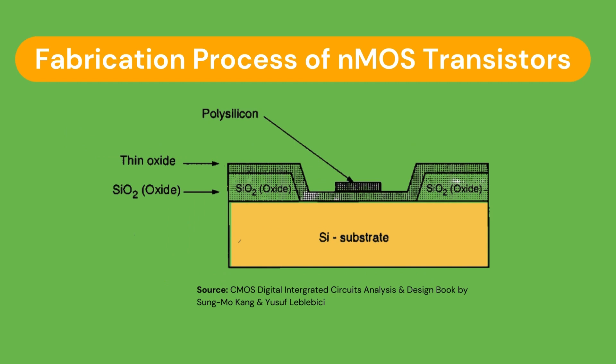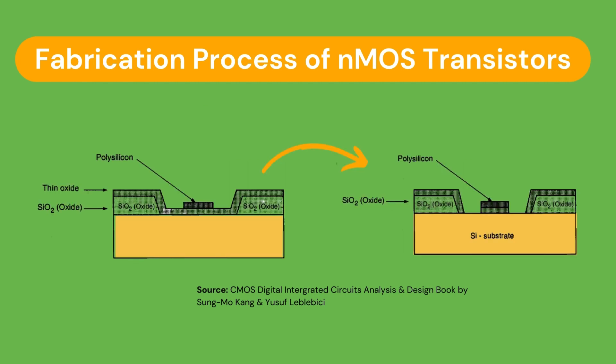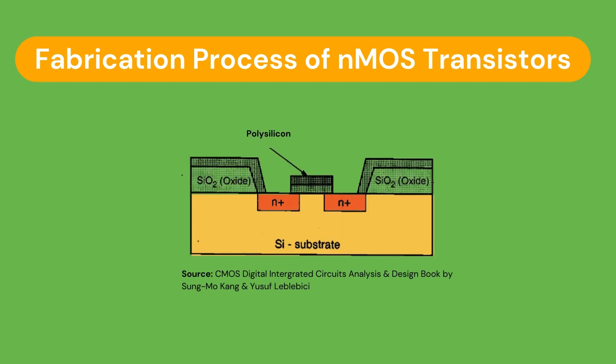After depositing the polysilicon layer, it is patterned and etched to form the interconnects and the MOS transistor gate. The thin gate oxide not covered by the polysilicon is also etched away, which exposes the bare silicon surface on which the source and drain junctions are to be formed. The entire silicon surface is then doped with a high concentration of impurities, either through diffusion or ion implantation. Since we're creating an NMOS transistor, we will be doping the surface with donor atoms to produce N-type doping.